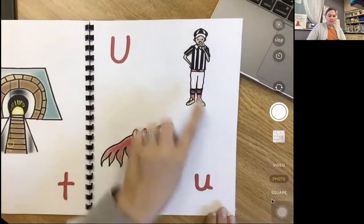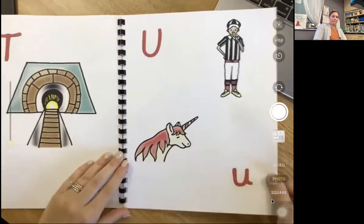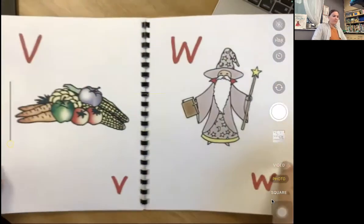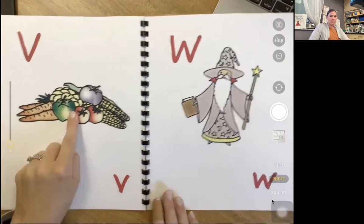U, uh, umpire. U, U, unicorn. V, v, vegetables. V, v, vegetables.